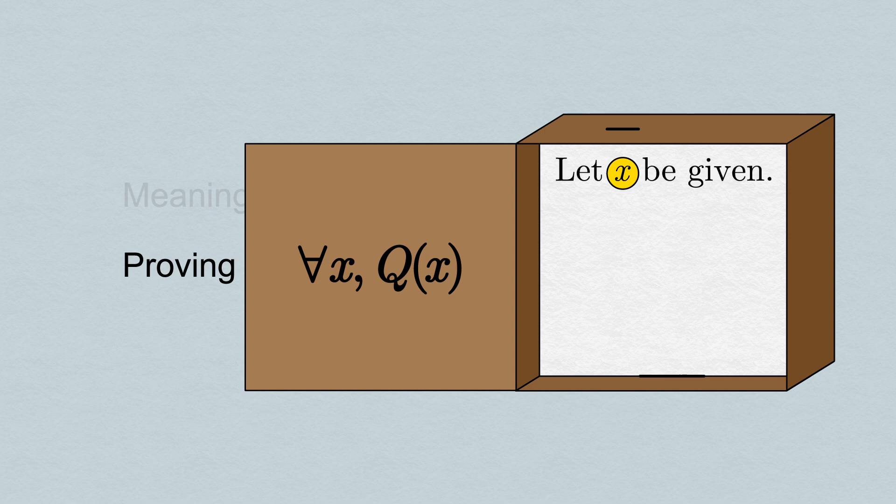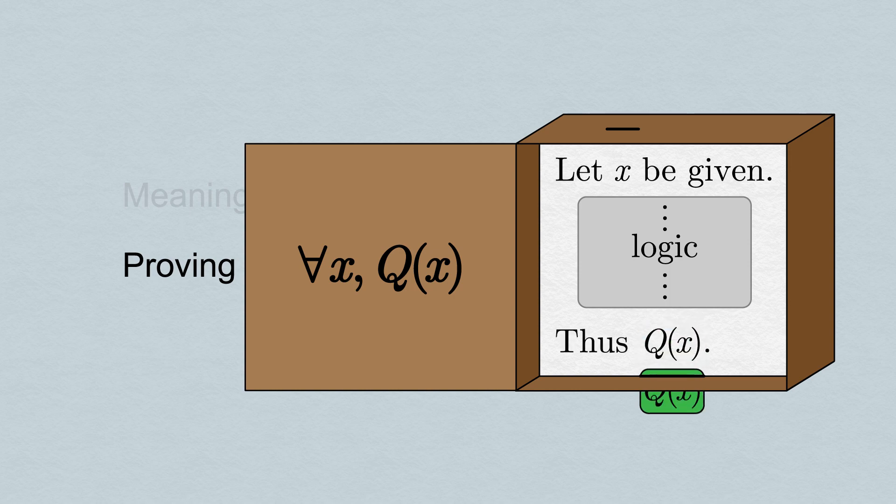We have no control over its value in the proof once it's given to us, so our proof must work independent of what value of x we're given. Once we've introduced x into our proof, we then need a sequence of valid logical steps, concluding with the deduction that Q(x) is true, which is what our box spits out.